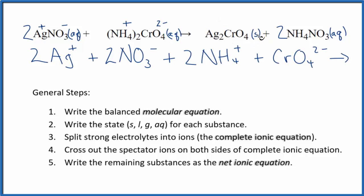For the products, we don't split solids apart. So we're just going to write Ag2CrO4 for that silver chromate. And then we said plus and minus. So we have two ammonium ions, just like in the reactants. Plus we have two nitrate ions, just like the reactants.